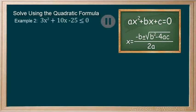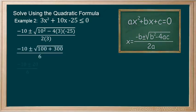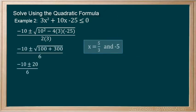Pause and try this example. Now, substituting values for a, b, and c, we get the following. x is equal to 5 thirds and negative 5.